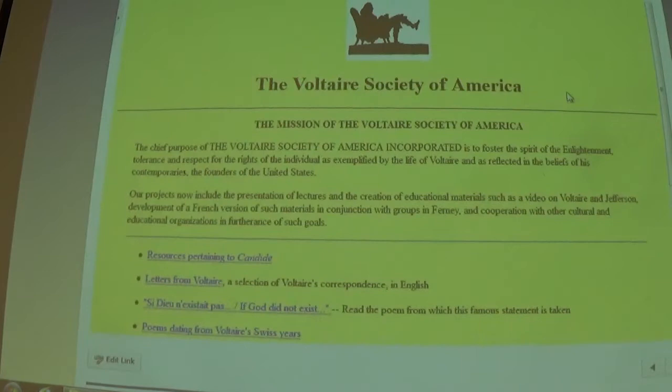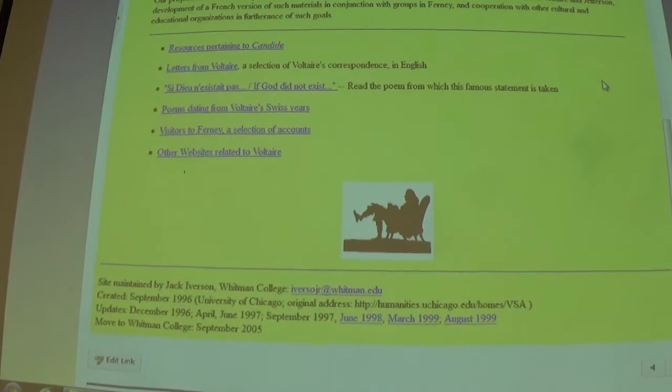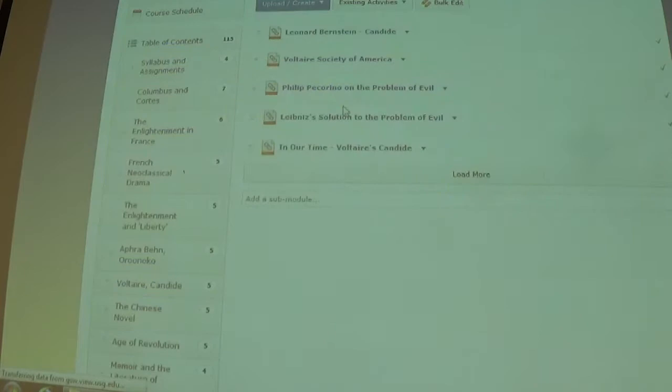Second link is to the website of the Voltaire Society of America, which I believe is still active, though I don't think this website has been updated in rather a long time. Yeah, 1999. Oh, 2005. All right, that's better than I thought. So yeah, there are a couple of resources on Voltaire and on Candide that this links to that you can check out if you feel so inclined.